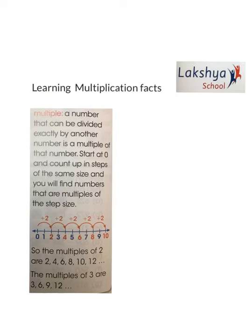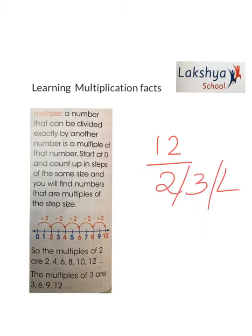Let's learn what is a multiple. When a number, say 12, is divisible by another number — 12 is divisible by 2, by 3, by 4, and by 6 — it is said to be a multiple. Or, when you start at 0 and count in steps of the same size, you will find numbers that are multiples of the step size.